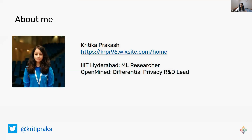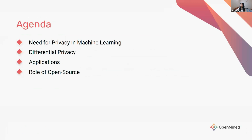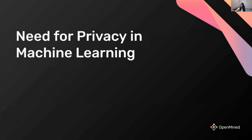OpenMind's main agenda is to build secure and private AI. I'm going to talk more about it towards the end of the presentation. The agenda is: first, why we need privacy in the scope of machine learning; then, a specific field called differential privacy; then a couple of applications; and finally, the role of open source in this space.